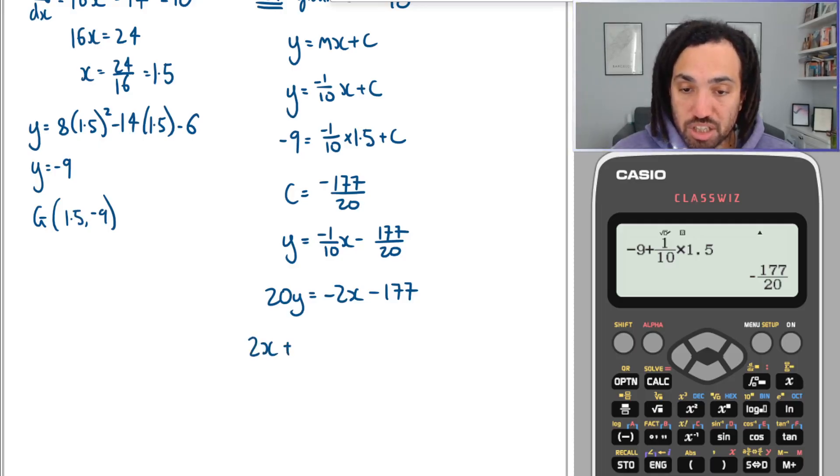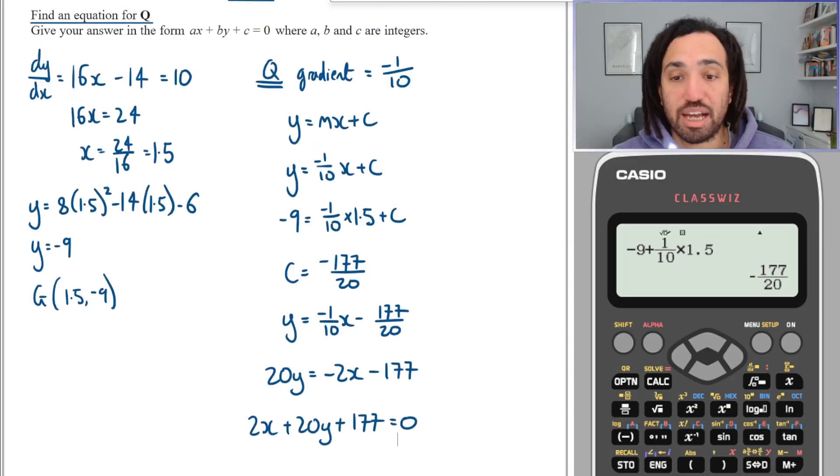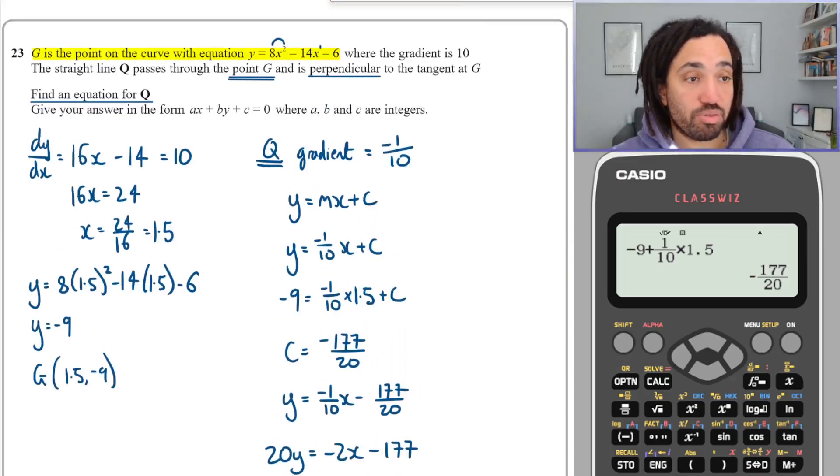So now I can move all of my terms over to the left-hand side and they all become positive, which is nice and convenient, equals zero. And that is the correct form they asked for. That is question 23 on differentiation, which is really like an A-level question, but we did it!